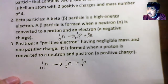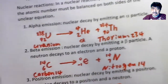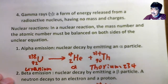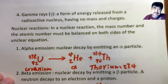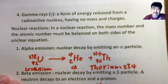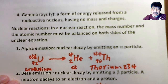The last one is a gamma ray. Gamma ray is not a particle — gamma ray is a form of energy. They are released when the nucleus transitions from a high energy state to a lower energy state.